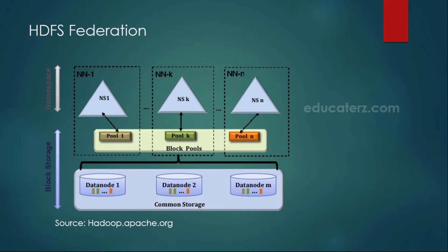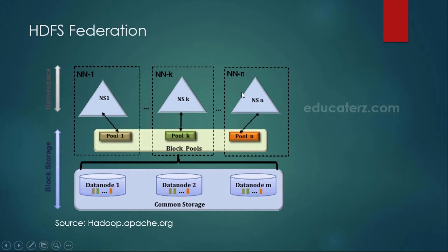Another latest feature in Hadoop 2.x is HDFS federation. As part of HDFS federation, in the earlier architecture there was only a single name node. But here, as part of HDFS federation, you can have multiple name nodes — name node 1, name node 2, name node 3, and so on, any number of name nodes you can have. All of these name nodes are independent nodes, meaning one machine cannot interact with another machine, and everybody is maintaining its own metadata information.